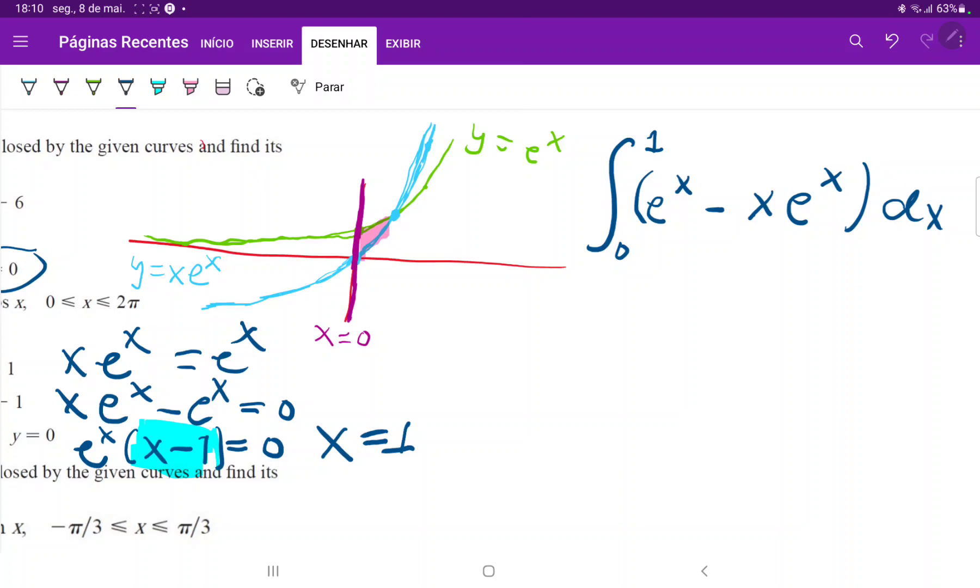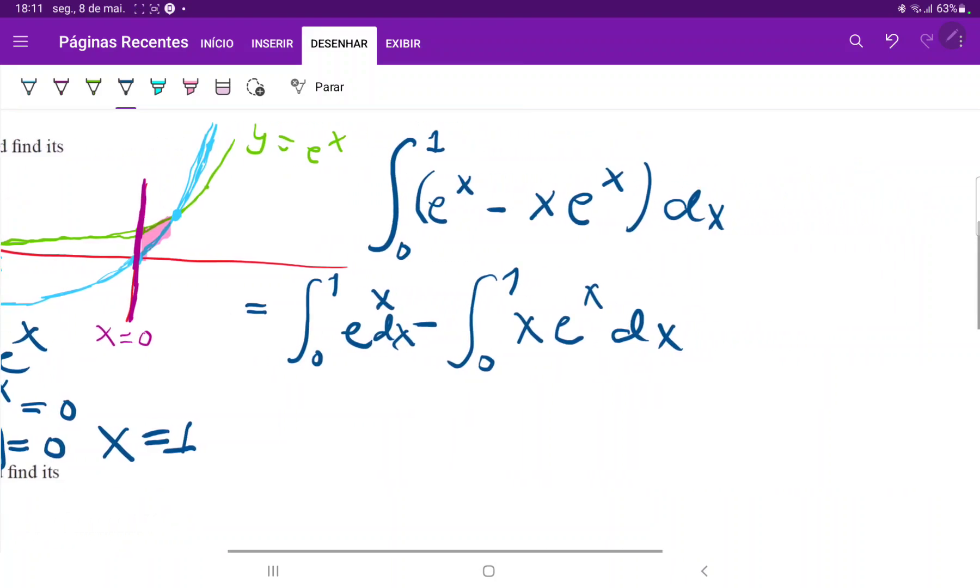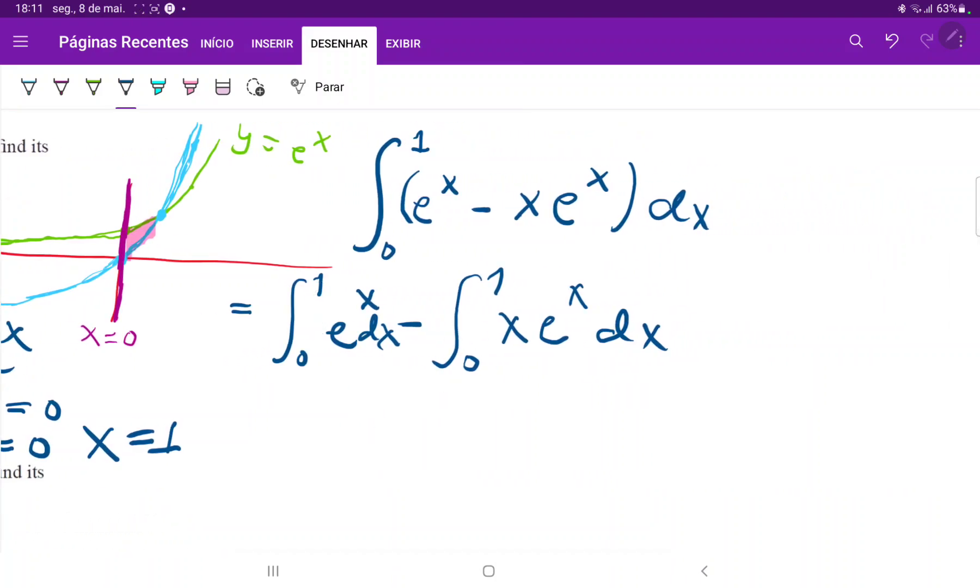Now, how do we integrate it? We do have to use integration by parts for this. So we'll just split it up and then do integration by parts. So this is equal to the integral from 0 to 1 of e to the x minus the integral from 0 to 1 of x e to the x, and that is dx. So the integral of e to the x is just e to the x. So this is just e to the x from 0 to 1, and then minus.